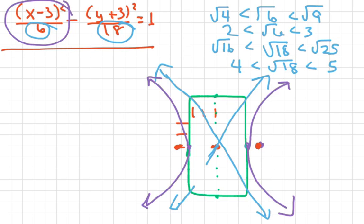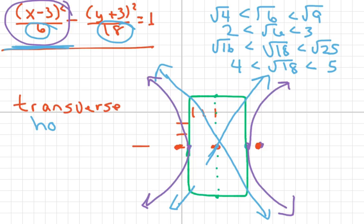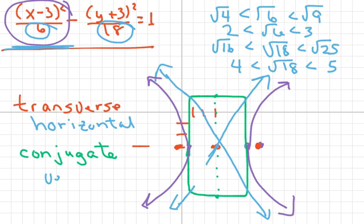The transverse axis is horizontal, and the conjugate axis is vertical. The transverse axis is the main axis — since x comes first, it's horizontal. The conjugate axis, which is the follower, is vertical. And that's all — thank you and have a nice day!